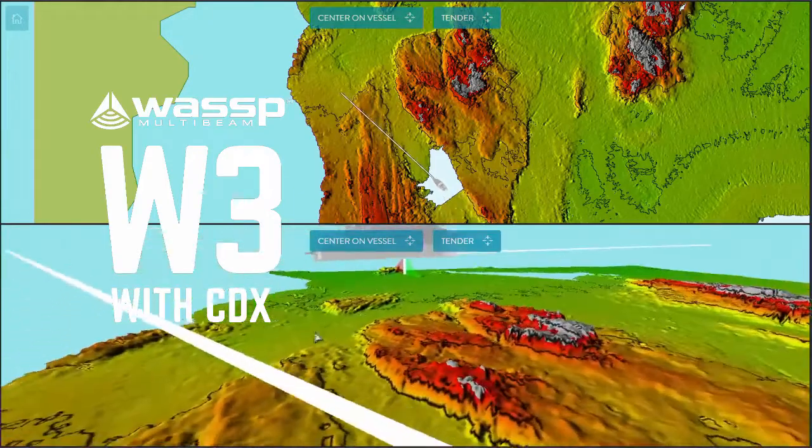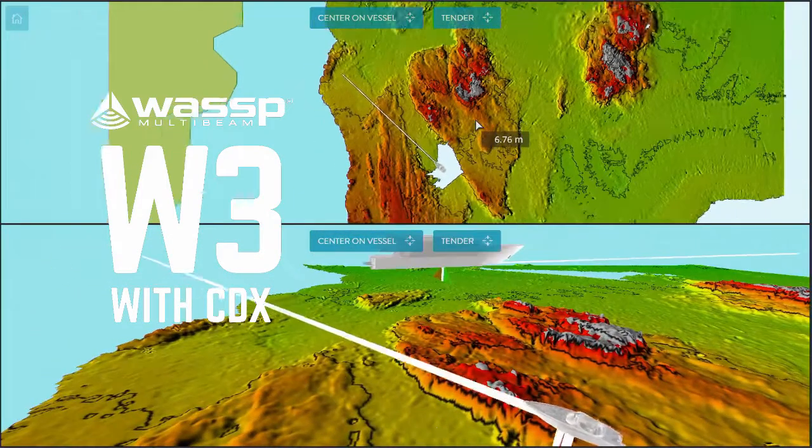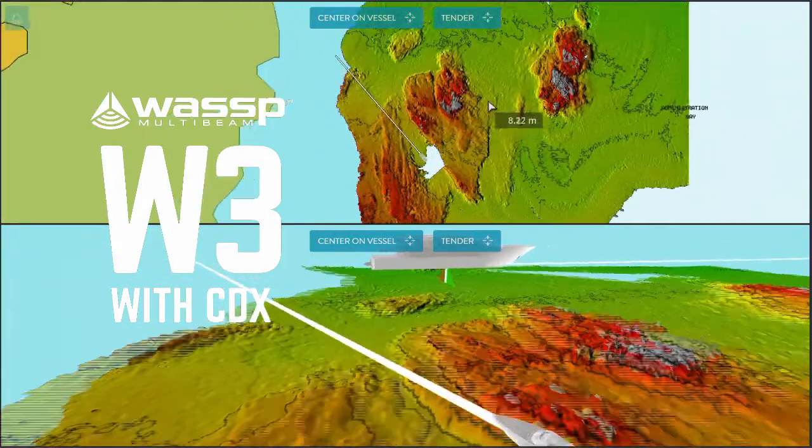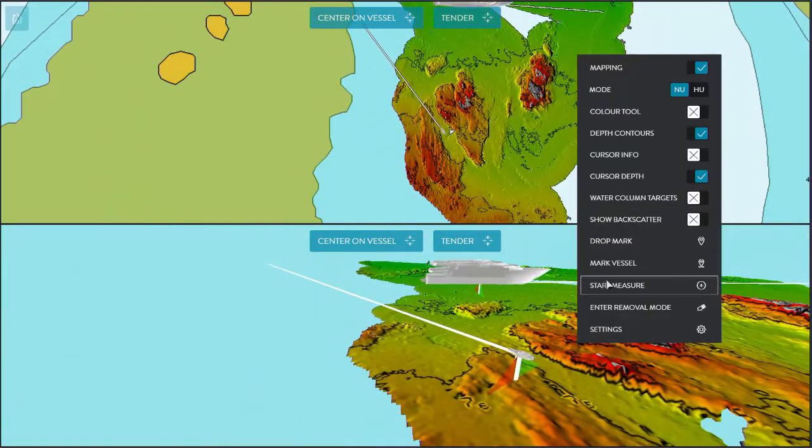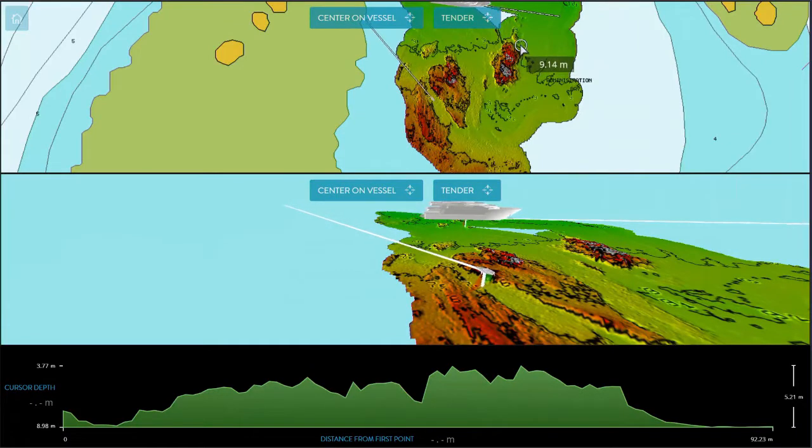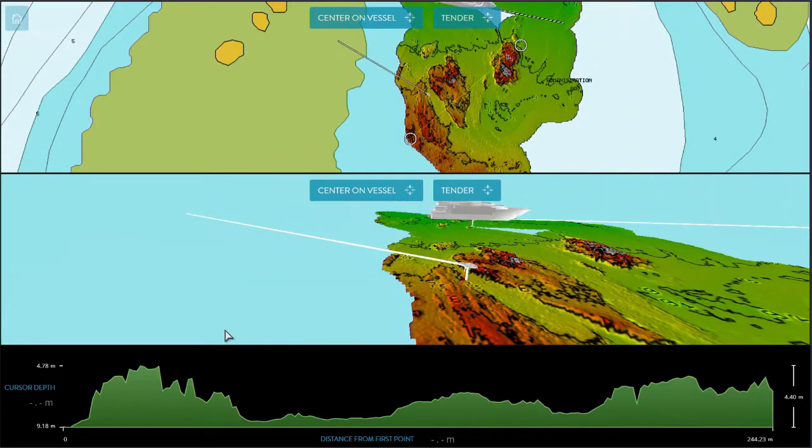The WASP W3 with CDX makes the skipper and the officers' job of getting our boat into the perfect anchorage much easier and much safer. We've avoided any incidents and we won't have to move our boat once we're safely at anchor.